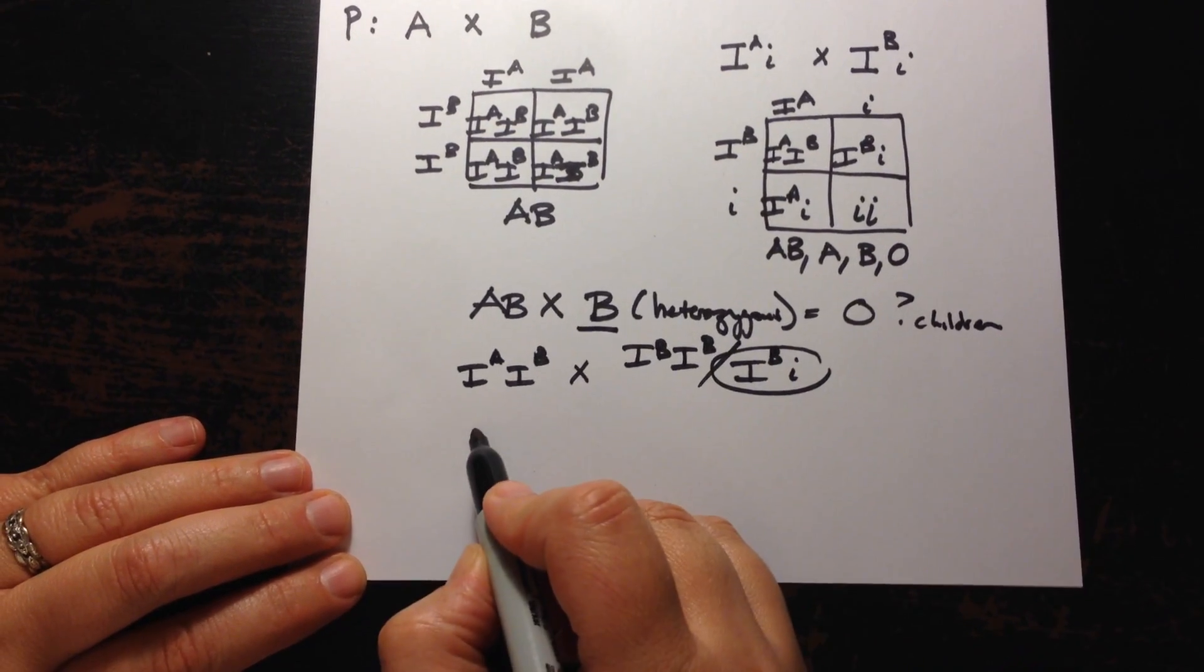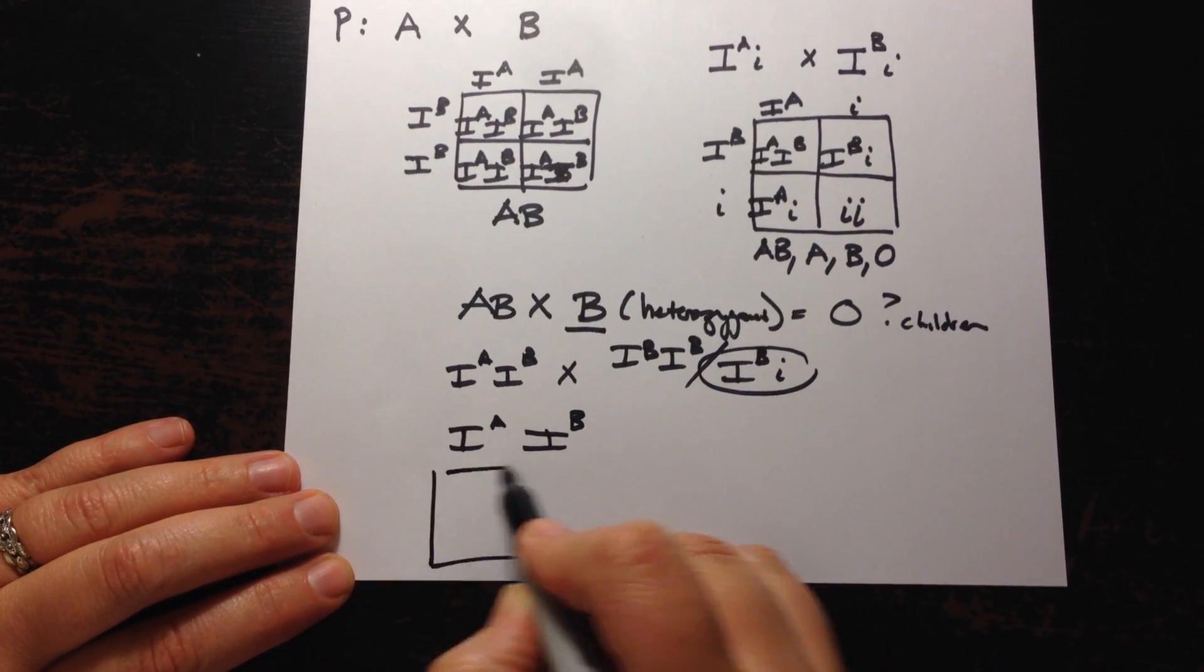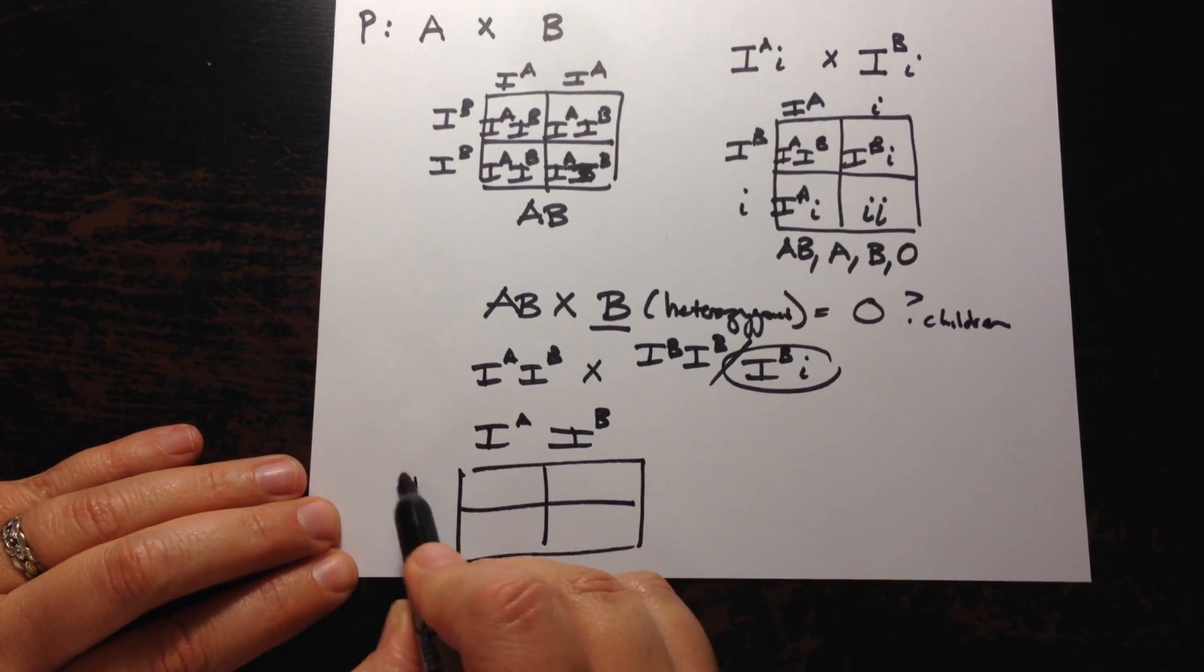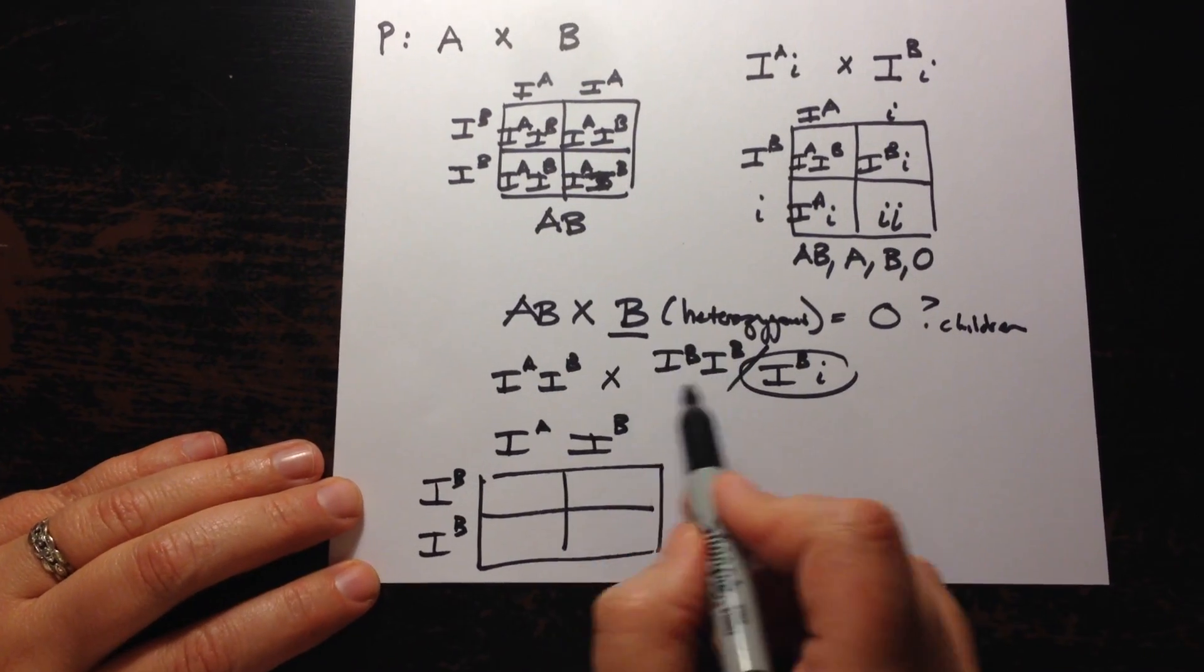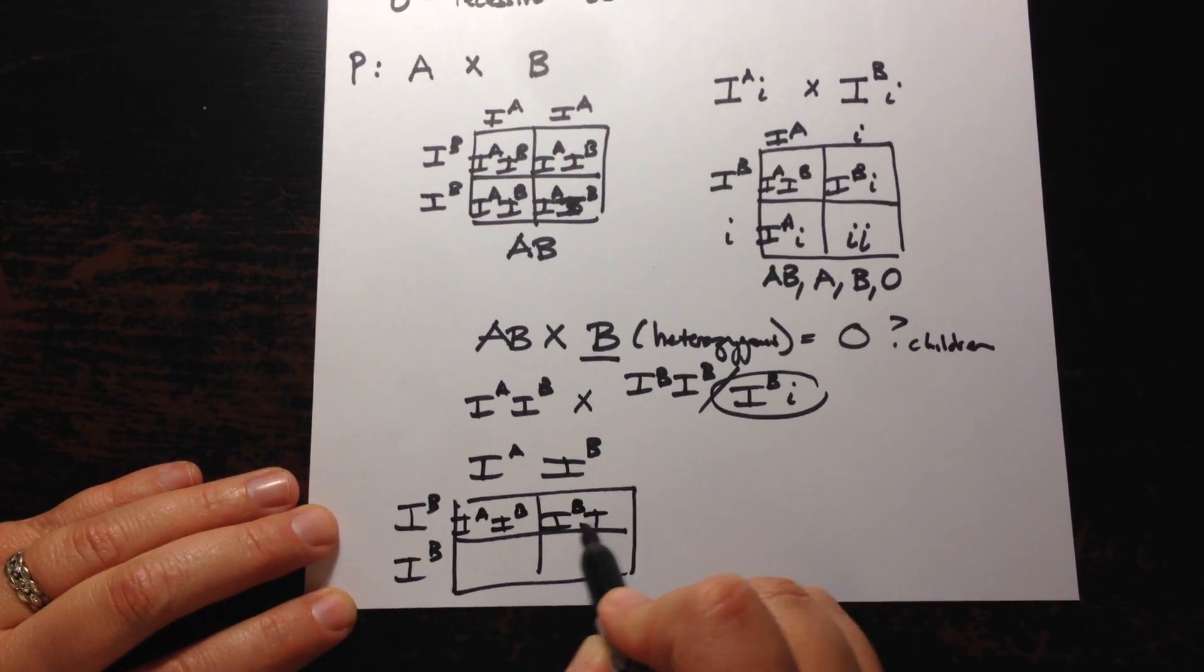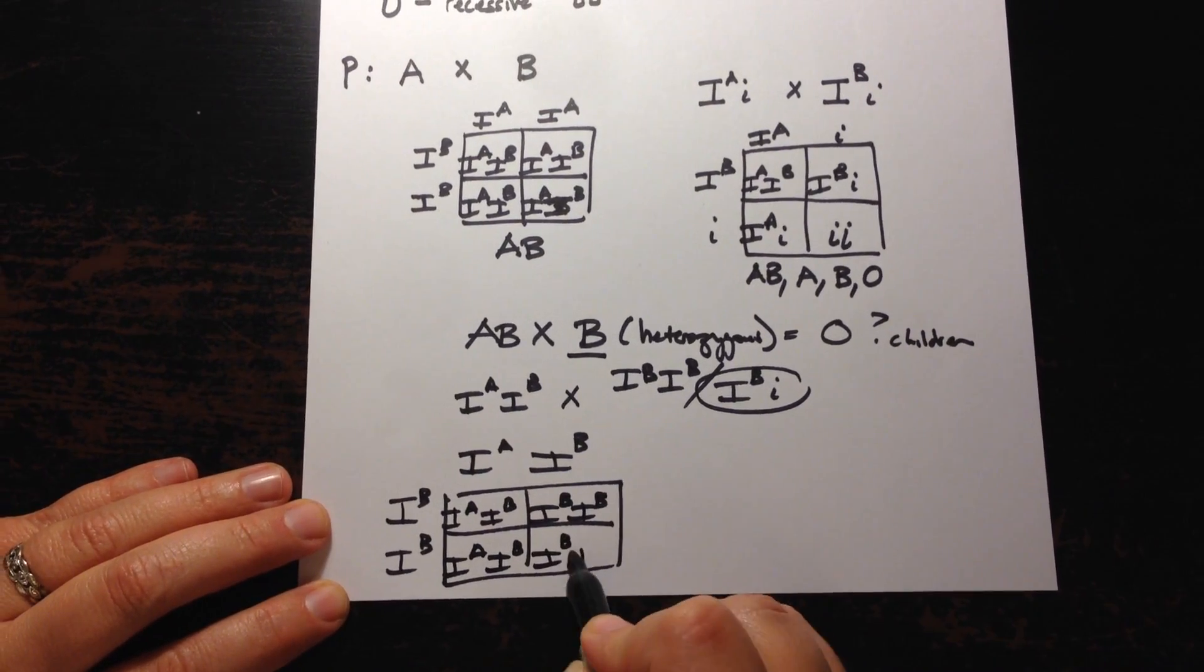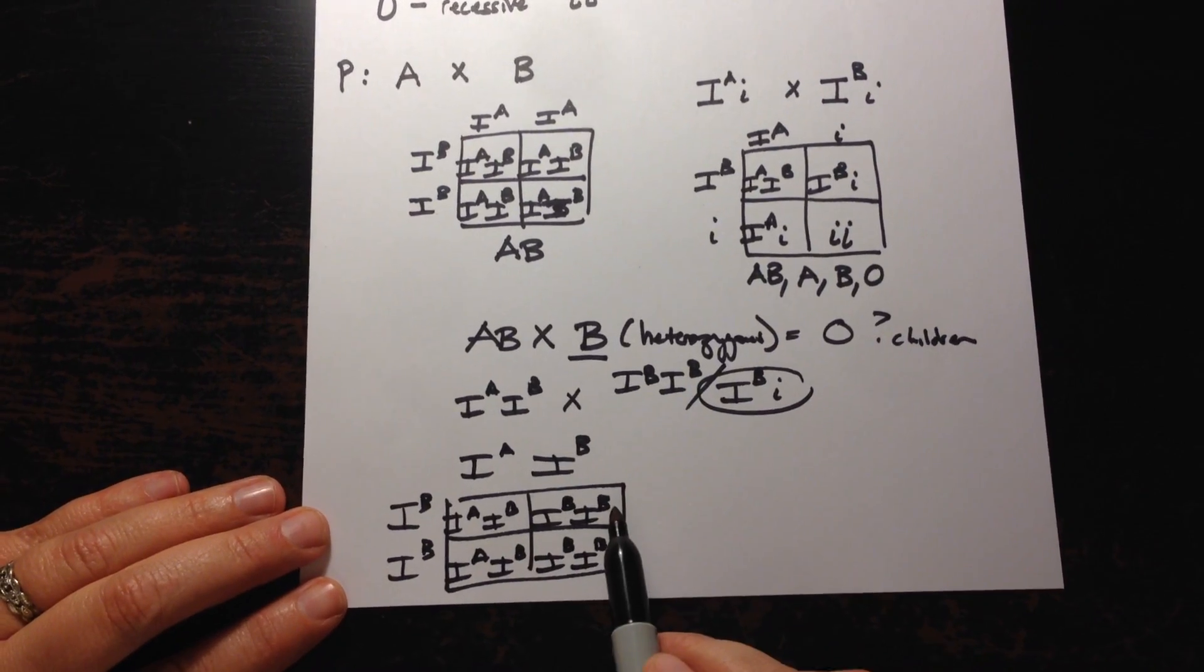So let's draw these Punnetts. Let's put I^A I^B here for type AB and then we start with that first one. I'm just going to do a test cross. What if it was this one and not that one? Well then here you'll see you can make type AB blood and you can make type B blood but it is the homozygous dominant type B blood.